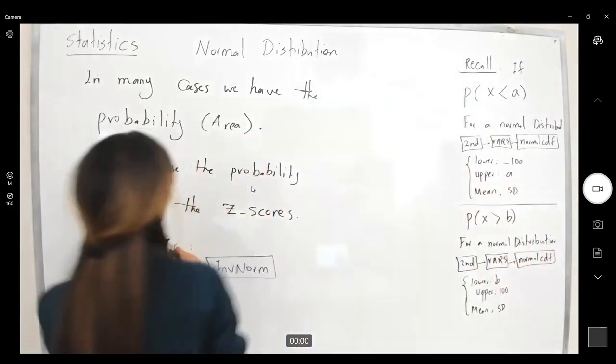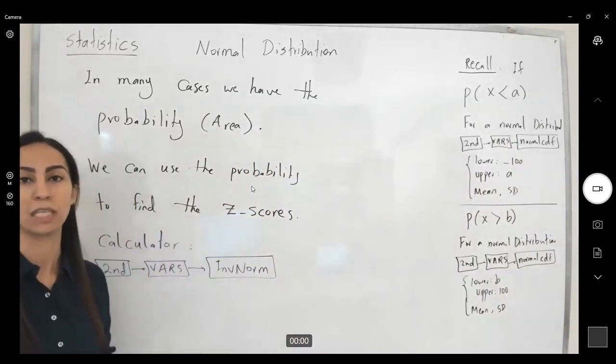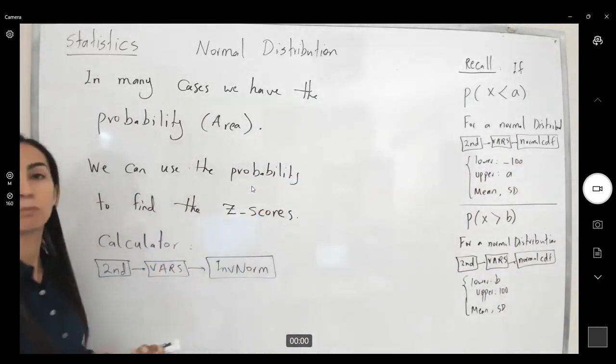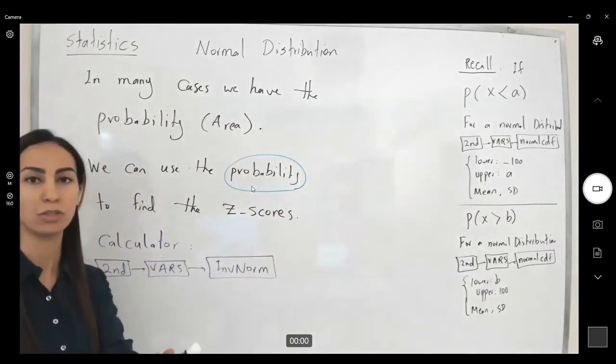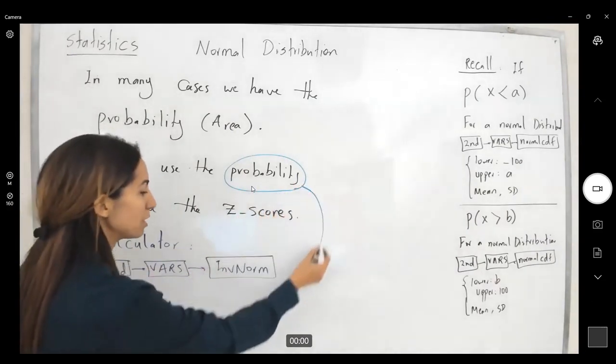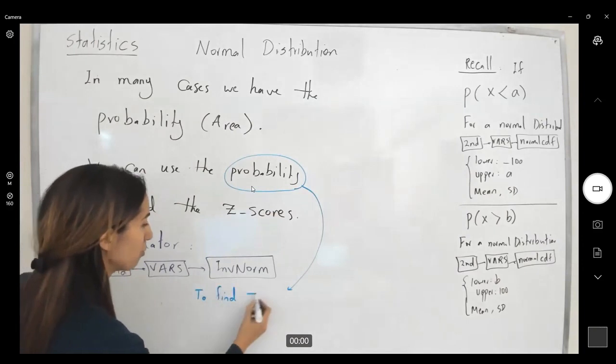But this case is different, guys. It says, hey, you do not have your X. You do not have your Z. What do you have? You have the probability. This number, this value is given to you.